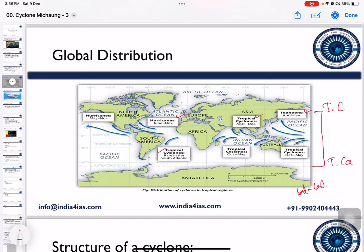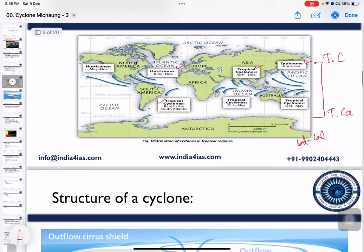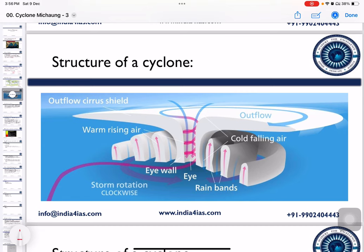A mature tropical cyclone consists of three parts: the eye region at the center, the eye wall surrounding it, and rain-bearing bands. The eye region is the calmest part of the cyclone, with clear skies, warm temperature, and the lowest pressure. The eye wall is the most dangerous part — a ring of thunderstorms where the heaviest rainfall occurs. Beyond the eye wall, outward spiraling rain-bearing bands produce heavy rainfall and strong winds.